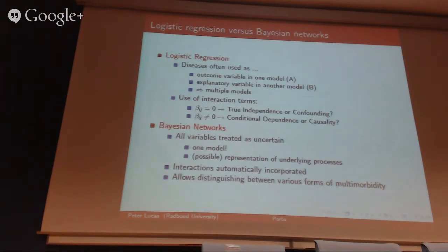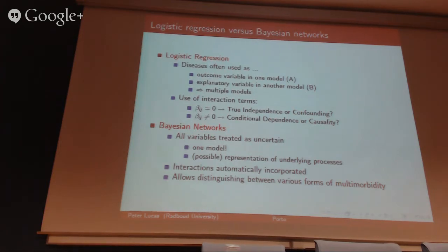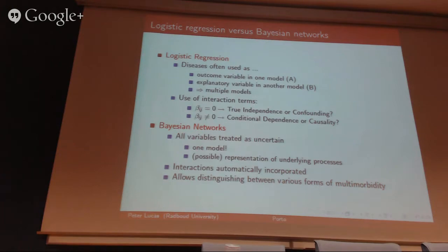To summarize: the standard approach of logistic regression gives you one model for every outcome variable, but very often you need to incorporate the outcome variable in another model, getting multiple models with multiple interpretations for different outcomes of your regression coefficients. Compared to a Bayesian network, you get just one model that tells you everything, gives you extra information about the underlying process, and provides automatic understanding of disease interactions, allowing you to distinguish different forms of multimorbidity.